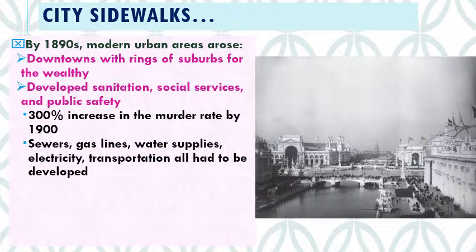Even here in Columbus, there was an inter-urban railway system that allowed people to travel through town, and it came into Bexley. As Bexley residents in the early 20th century were deciding how to pave their streets, pay for that, ensure a clean water supply, and handle waste disposal — all of these things had to be solved as cities grew and suburbs developed around them.